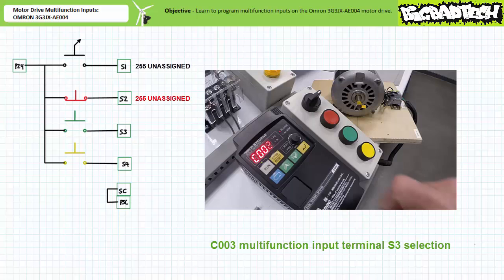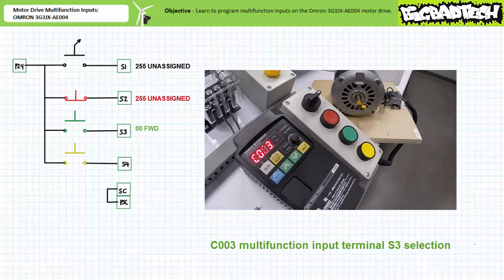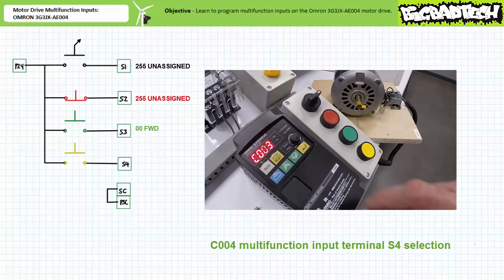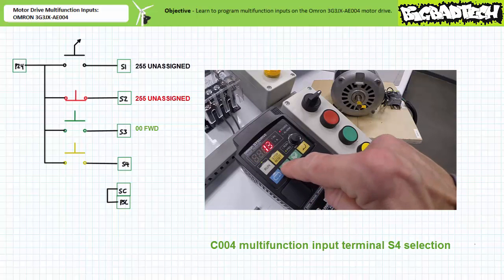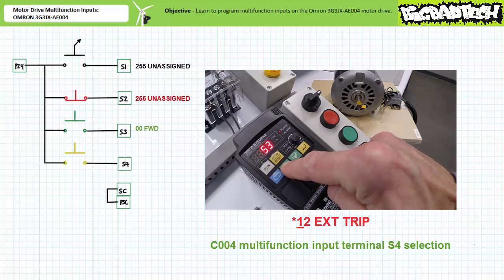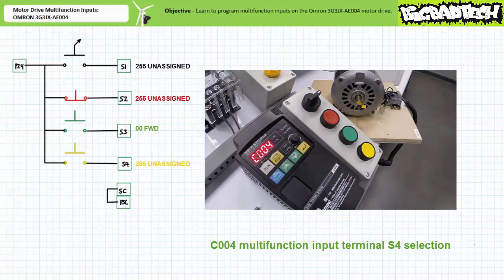Navigate to communication parameter C003, multi-function input three selection. Press mode. As anticipated, it is in the default state of 18, reset. Decrement this to 00, forward, and press enter to save it. Navigate to communication parameter C004, multi-function input four selection. Press mode. As anticipated, it is currently in the default state of 22, external trip. Increment this to 255, unassigned, and press enter to save it.